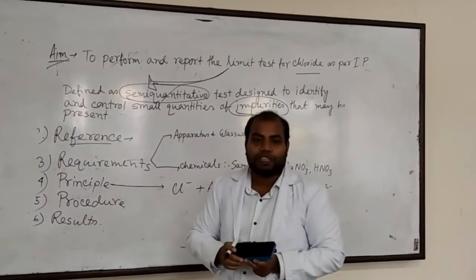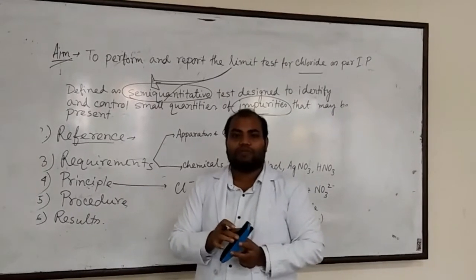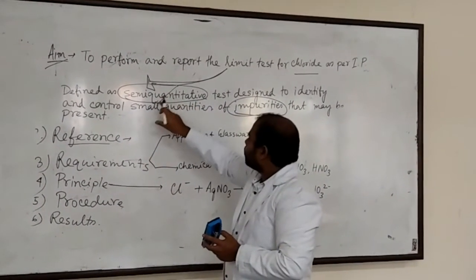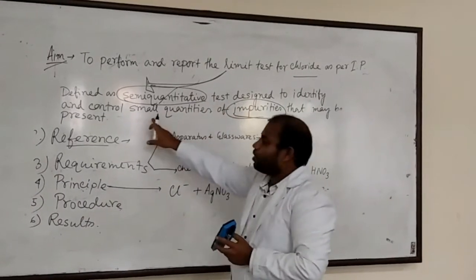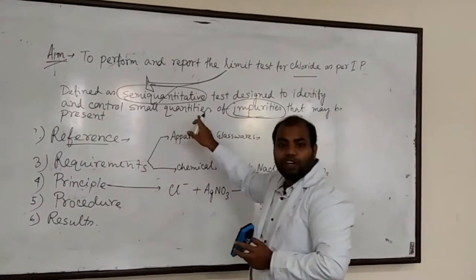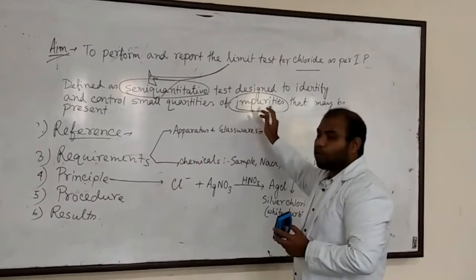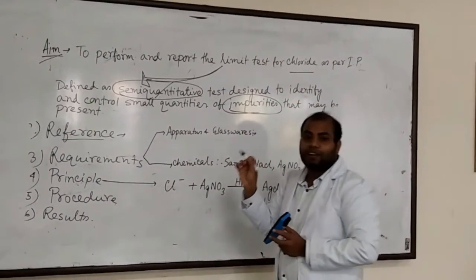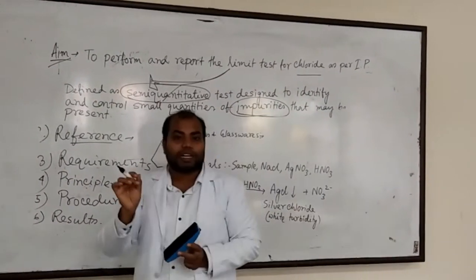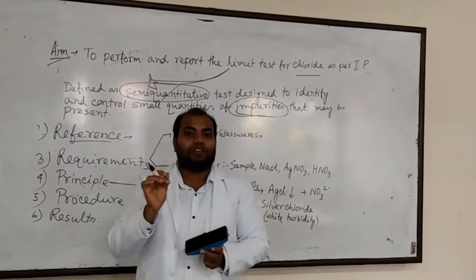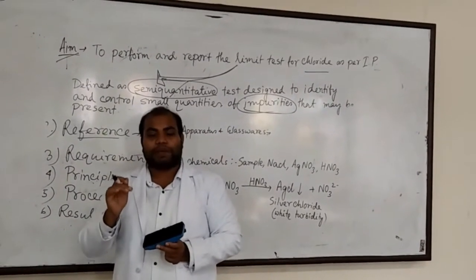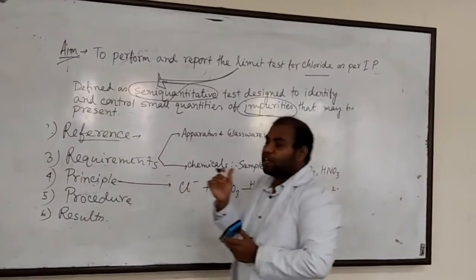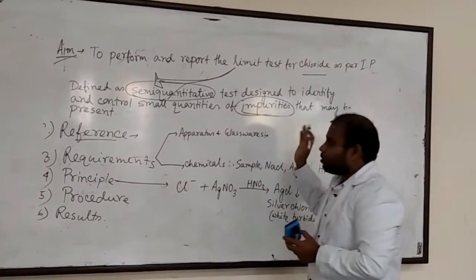There are two types of analysis: quantitative and qualitative. This limit test is semi-quantitative, meaning we can identify and control the small amount of impurity that may be present. Whether it is present or not — that is, whether it exceeds the permitted limits — can be identified using this limit test.